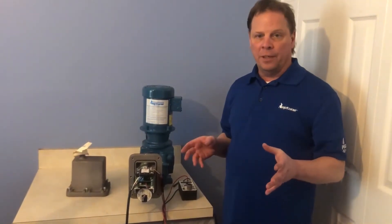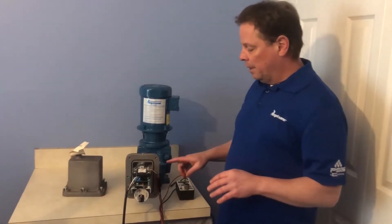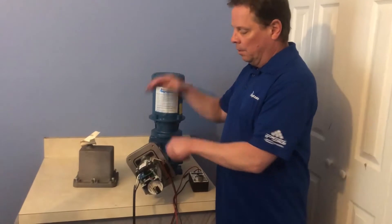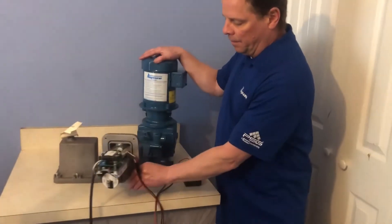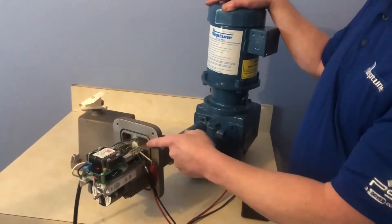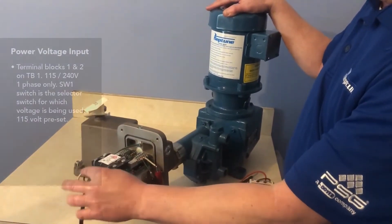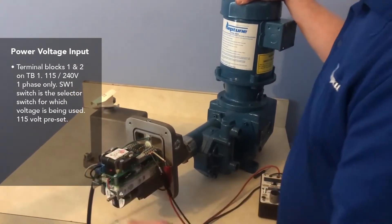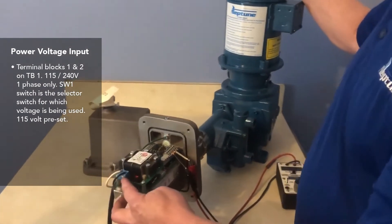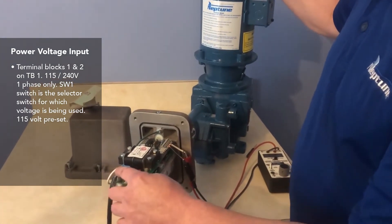First thing you do is your connections, which is your voltage connection, which will typically come through into this area, this connector right here. It will come through and then your power or your voltage comes into these two terminal blocks, which is TB1. And you see your hot and your neutral connections here.